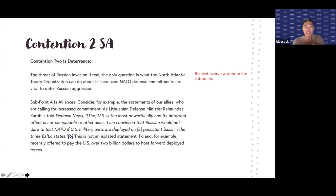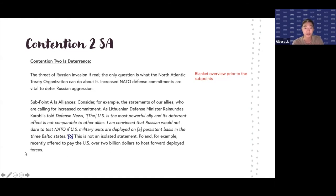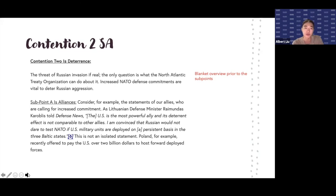This is his second contention. The main structural difference is that he has a blanket overview statement prior to any of his subpoints. So he has the tagline, the topic sentence, the evidence, and also an analysis statement. Before he starts his subpoints — subpoint A on alliances and subpoint B on permanent presence — he has this overview statement that increased NATO defense commitments are vital to deter Russian aggression, setting up the rest of his subpoints.